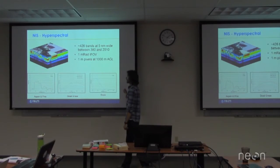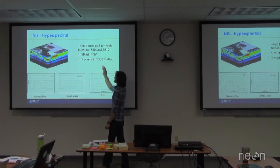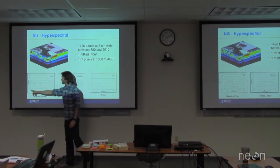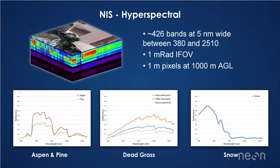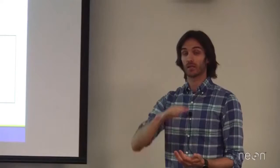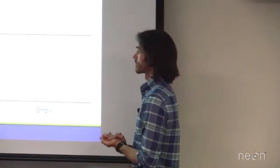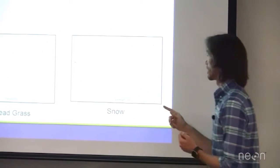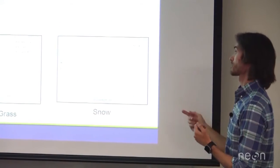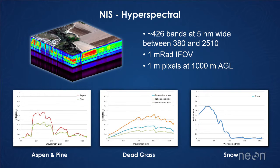And so the advantage now of having all of these different bands is that we get these really nice detailed curves of the different features in our images. Remember that Landsat curve looked very sort of disjointed, non-continuous. But now with these, with the hyperspectral data, we get these very nice detailed curves of the different features.